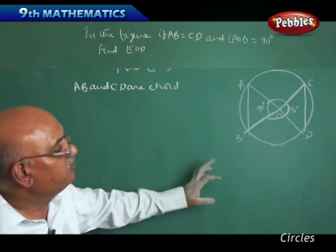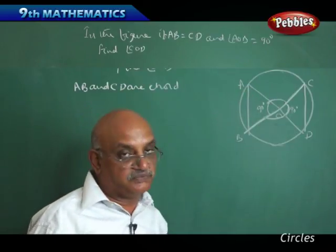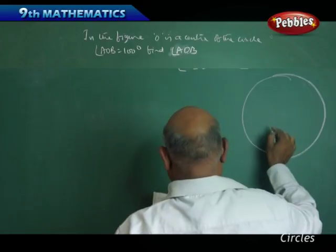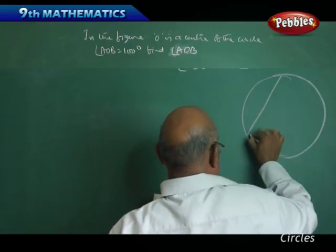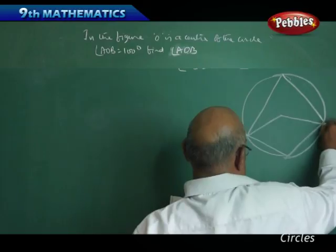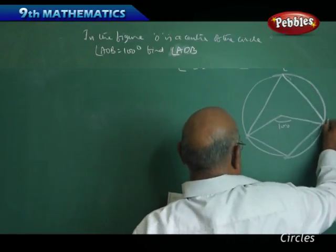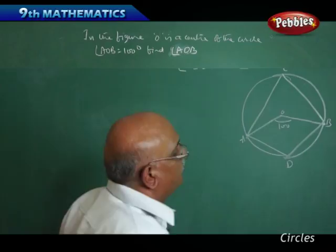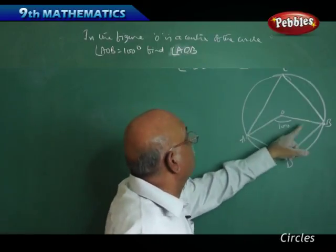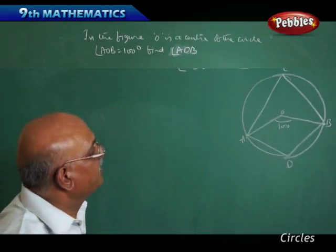Now in the next question of the same type, we are going to see that if one angle is given as X degrees, what is the other angle going to be. This is a circle with 100 degrees given here. The points are C, B, D, A, O. In the figure, O is the center of this circle and angle AOB is equal to 100 degrees. Now we want to find out angle ADB.